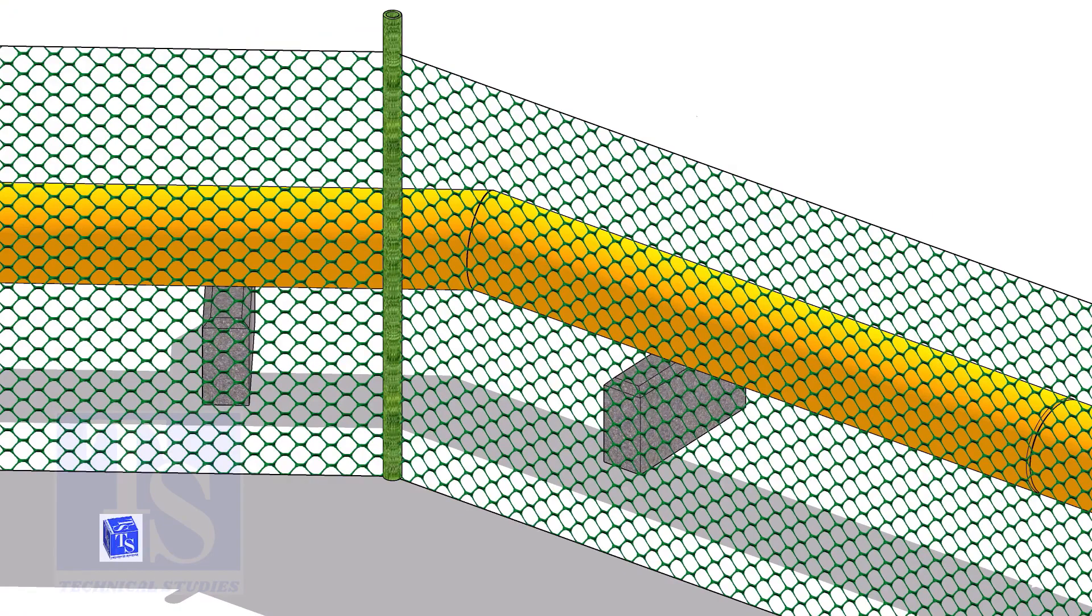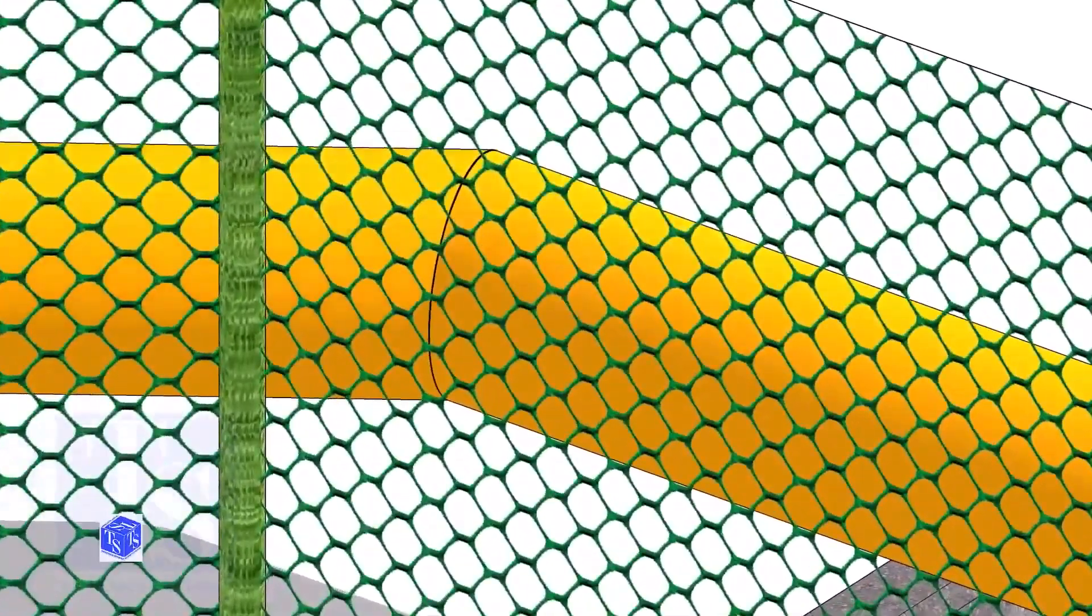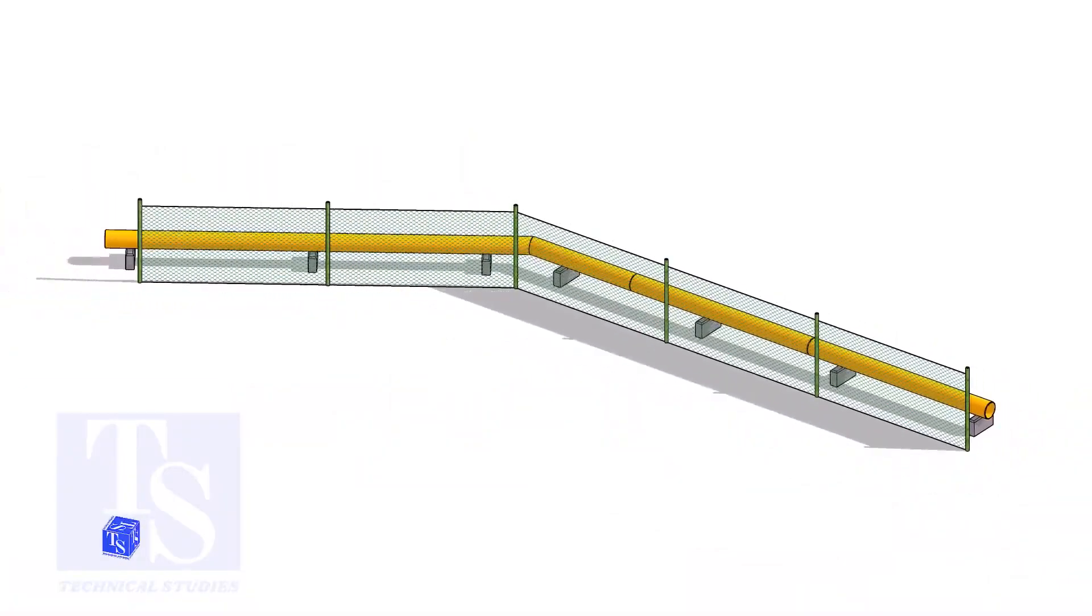But he has a problem. The fencing has several turns. He wants to know how to make miter cuts on the spot. He asked me how to find the miter cutback easily.